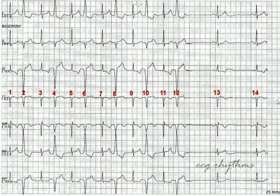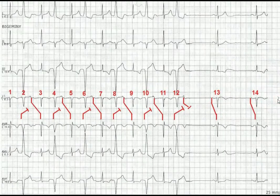The P wave after QRS 12 is not conducted — it is blocked. The possible explanation is shown in this ladder diagram. This is due to PVCs with concealed retrograde conduction — concealed meaning you cannot see the behavior of the PVC on the surface EKG.